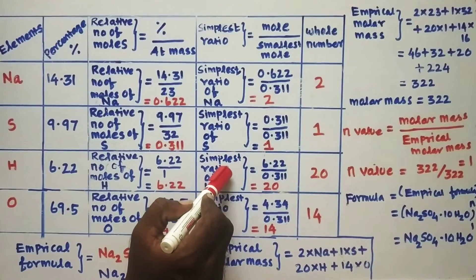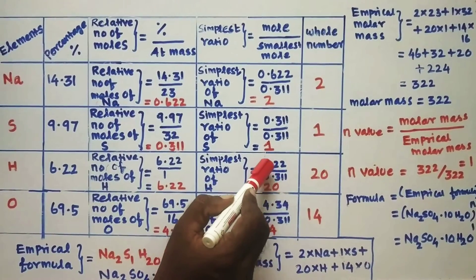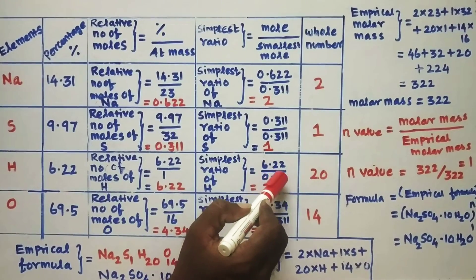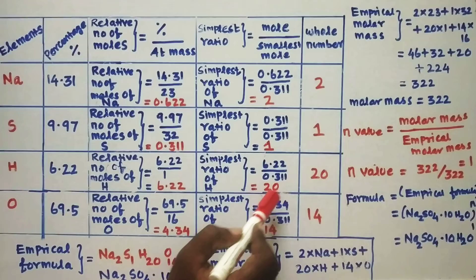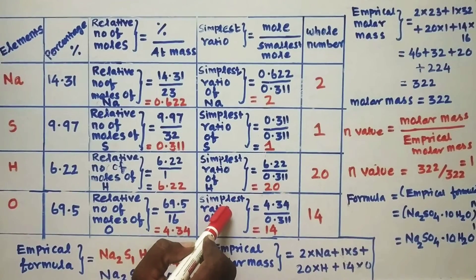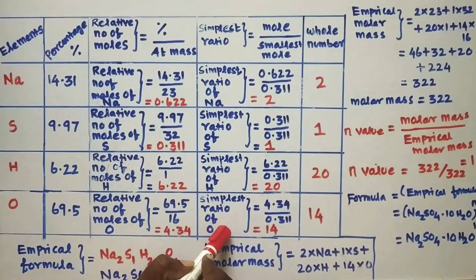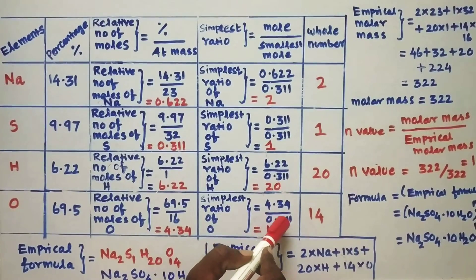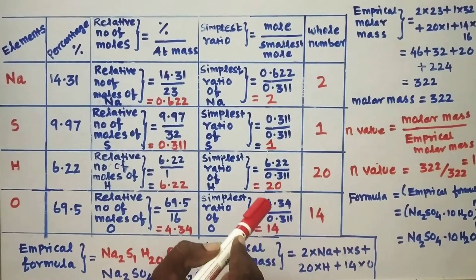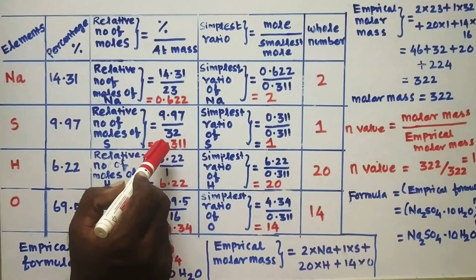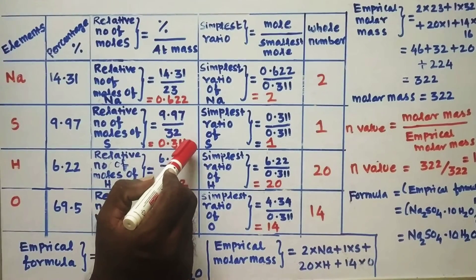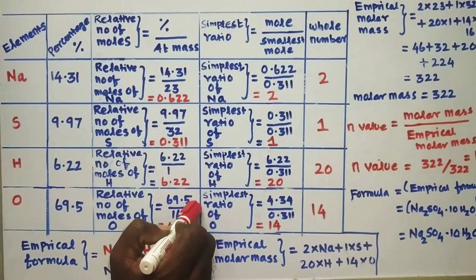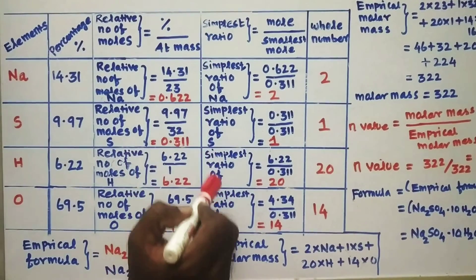Simplest ratio of hydrogen = 6.22 ÷ 0.311 = 20. Simplest ratio of oxygen = 4.34 ÷ 0.311. Dividing all mole values by the smallest mole number 0.311 gives us the simplest ratio for all elements.